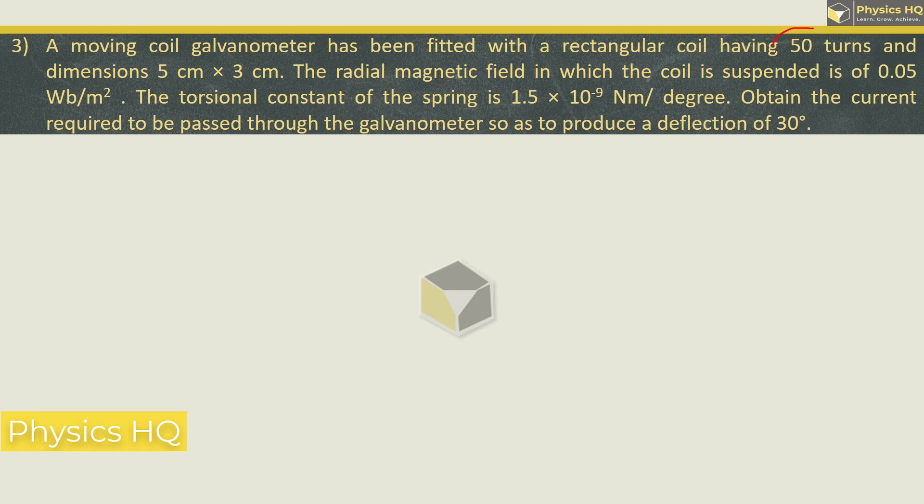A moving coil galvanometer has been fitted with a rectangular coil having 50 turns and dimension 5 cm by 3 cm. The area is 15 cm² or 15 × 10⁻⁴ m². The radial magnetic field in which the coil is suspended is 0.05 Weber per m². The torsional constant of the spring is 1.5 × 10⁻⁹. Obtain the current required to be passed through the galvanometer so as to produce a deflection of 30 degrees.